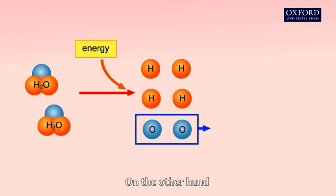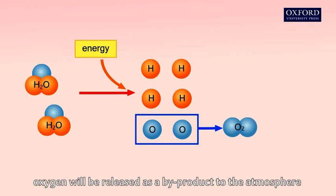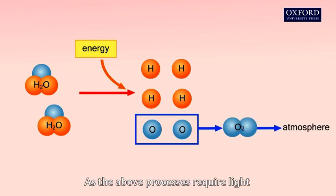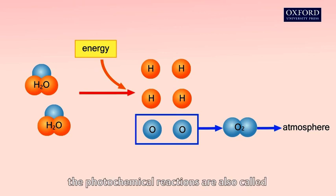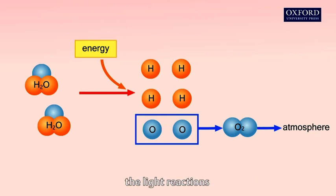On the other hand, oxygen will be released as a byproduct to the atmosphere. As the above processes require light, the photochemical reactions are also called the light reactions.